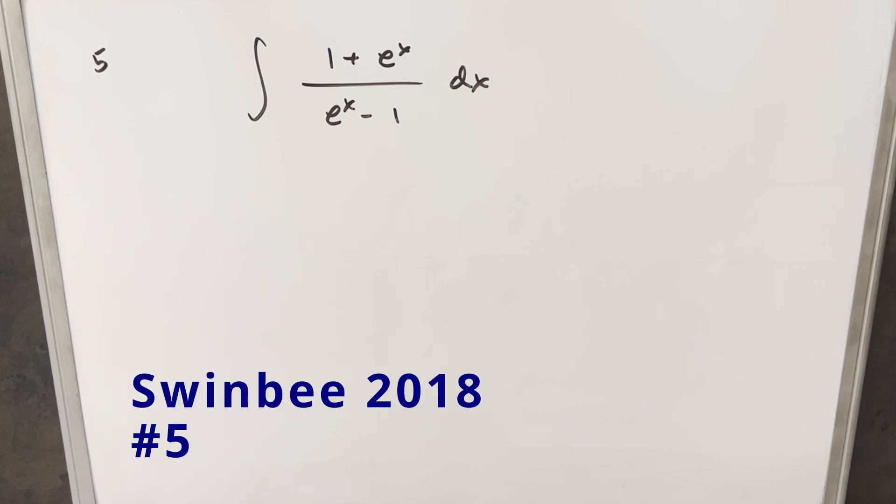Okay, we have here today another integral from the SWIN B 2018, problem 5. We have the integral of 1 plus e to the x over e to the x minus 1 dx.